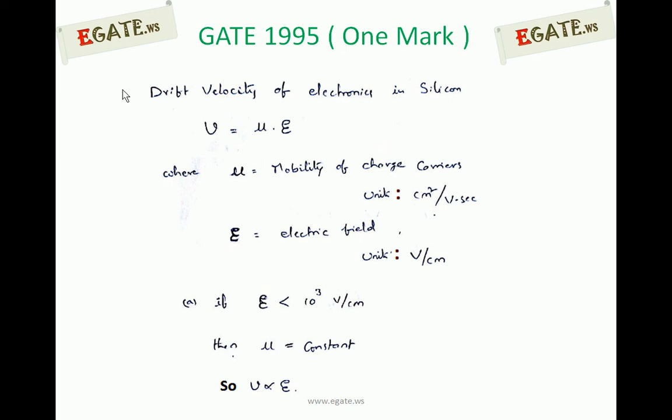For smaller electric fields — if the electric field is less than 10³ volt per centimeter — then Mu is constant. The mobility of electrons is not affected. So V is proportional to electric field. As electric field increases, V increases linearly. The relation between velocity and electric field is linear for small values of electric field.